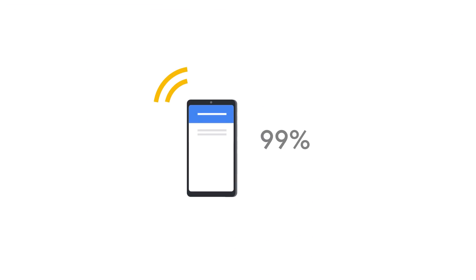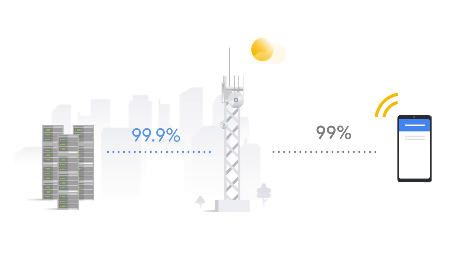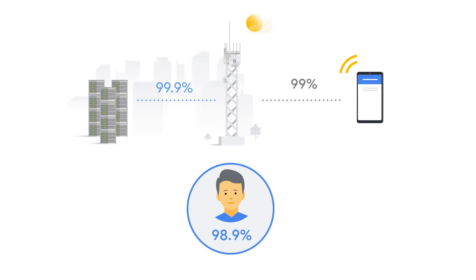That makes a lot of sense, because if my cellular network is only 99% reliable, but my service is 99.9% reliable, my users are never going to experience that additional 0.9% of reliability, because their cellular network is likely to fail before my service does. Yes, that's exactly correct. So while we want to reduce the risk of system failures, we have to accept some degree of risk in order to deliver these products and features.